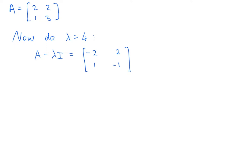Again, notice that the second row is a multiple of the first row, it's negative a half times the first row. So, I only have one equation to deal with, it's negative 2k1 plus 2k2 equals 0. I can choose any value I like for k2, so I'll choose it to be 1. Therefore, k1 is equal to k2 is equal to 1. So, my second eigenvector is 1, 1.